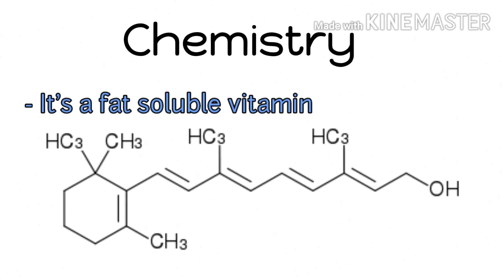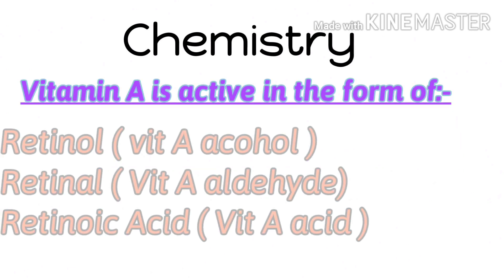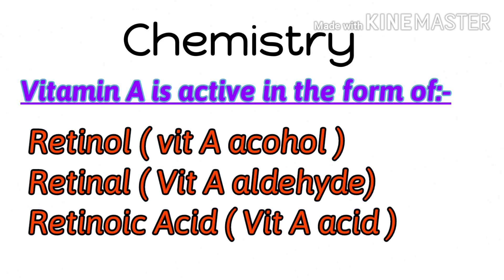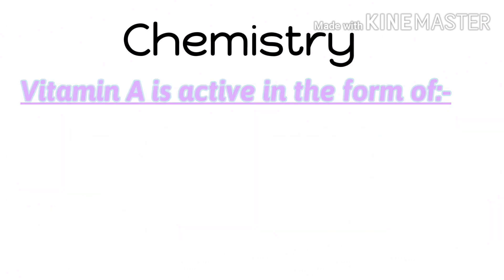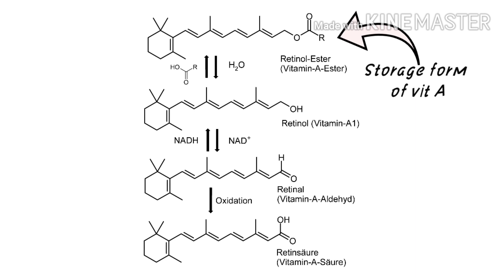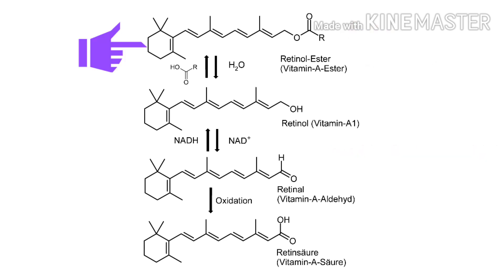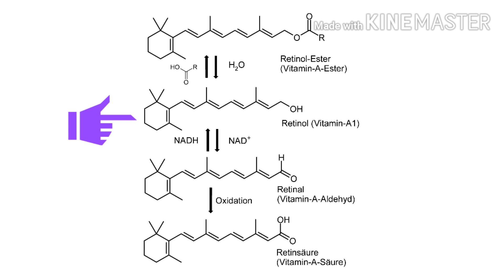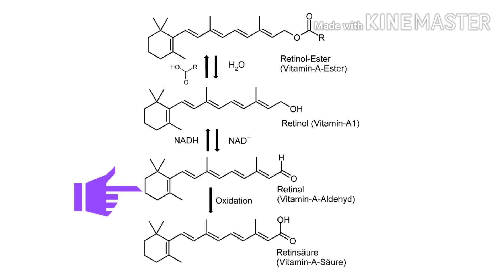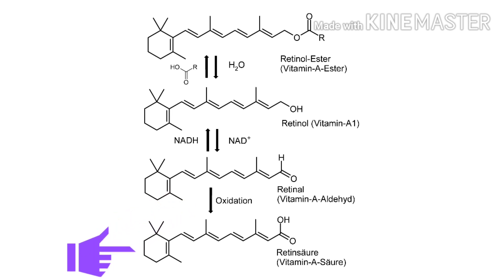Vitamin A is a fat-soluble vitamin, so there is toxicity manifestation if we consume it in excess. Active forms of vitamin A are retinol, retinal, and retinoic acid. Retinyl ester is the storage form of vitamin A; it is stored inside the parasinusoidal cells, also called Ito cells, in the liver. Retinyl ester is hydrolyzed to form retinol. Retinol reductase, which is an NADH-dependent reductase, converts retinol to retinal — this step is reversible. Further oxidation of retinal to retinoic acid is an irreversible step.